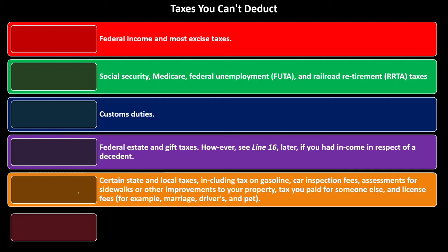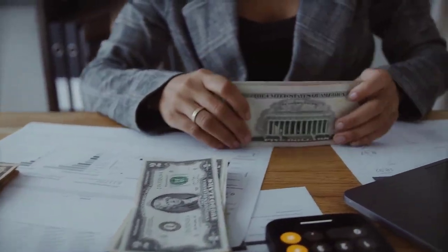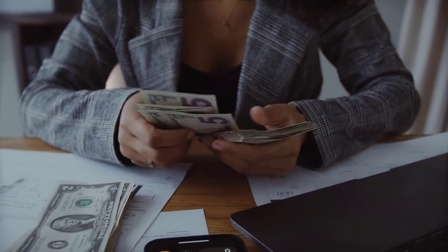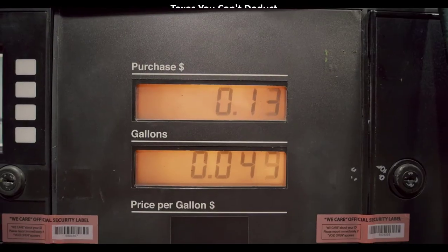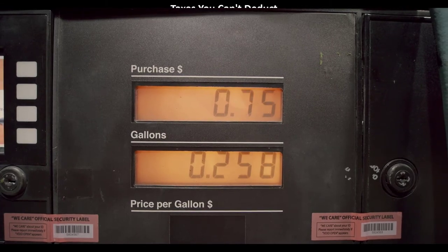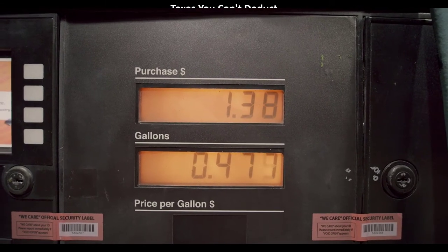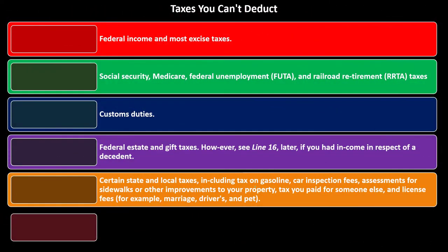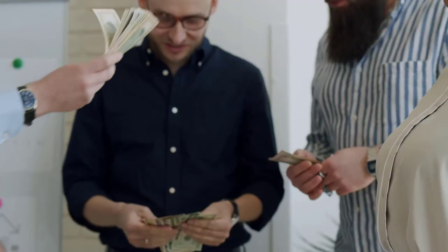These items are on the state and local side, and they are generally not deductible. We're more likely looking at state and local sales tax or state income tax. Gasoline tax is not something we can include — it's just part of the price of gasoline; maybe deductible on a Schedule C business, but not on Schedule A. Car inspection fees are not deductible. Assessments for sidewalks are not deductible. And you can't pay someone else's tax and deduct it on your return.